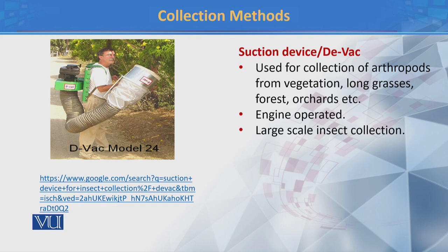इसी तरीके से इस तस्वीर के अंदर अगर हम देखें, तो यहाँ पे एक suction device जो कि D-wag है। अगर हमें जो collection है वो ज़्यादा चाहिए, बड़े level पर काम करना चाहते हैं, तो उसके लिए ये एक engine operated device होता है जिसको D-wag कहते हैं। इसकी मदद से हम आसानी से, अगर thick vegetation है, long grasses हैं, इवन जो orchards हैं, वहाँ से हम insects को collect कर सकते हैं। जैसा कि इस तस्वीर के अंदर आप देख सकते हैं, ये engine operated है जो कि gasoline से operate कर सकता है। ये एक pressure के साथ insects को अपनी तरफ खींचता है, बाद में इन insects को आसानी से हम separate कर सकते हैं, और जितने भी unwanted insects हैं, या जो extra material है, या जो dust है, उसको हम आसानी से remove कर सकते हैं।